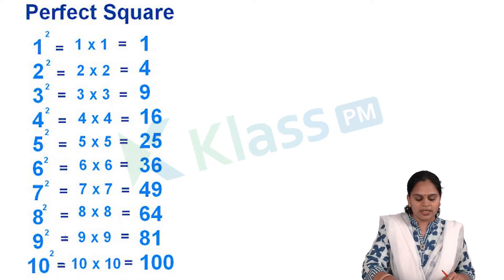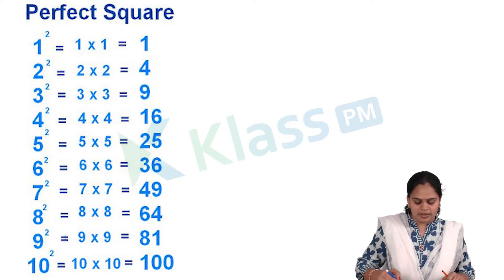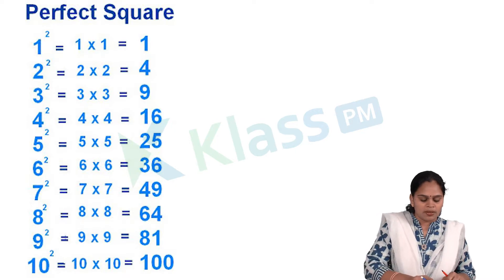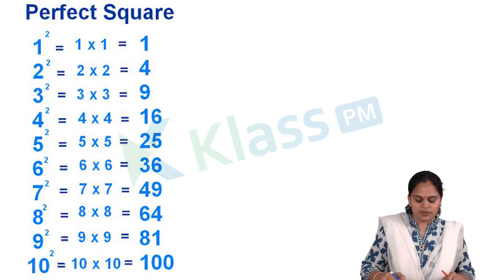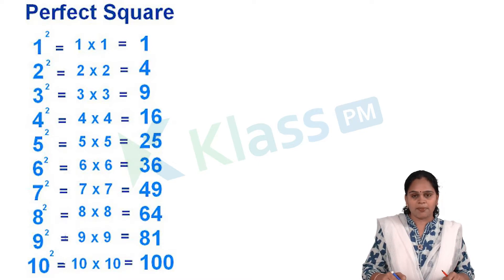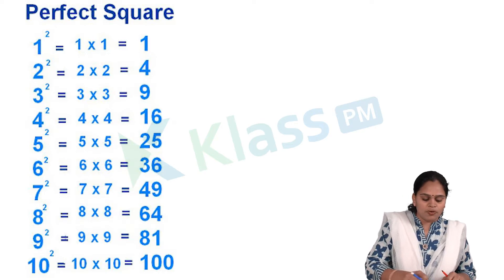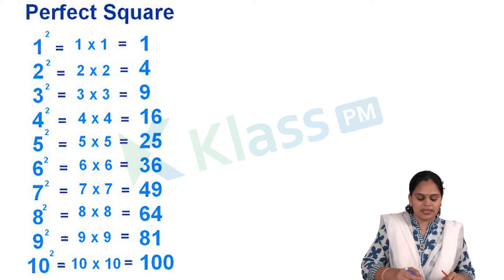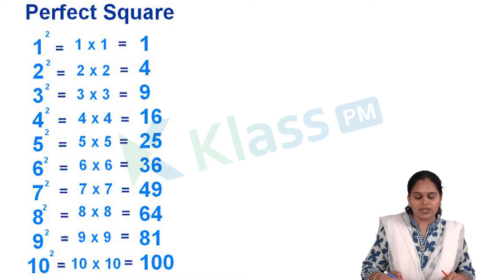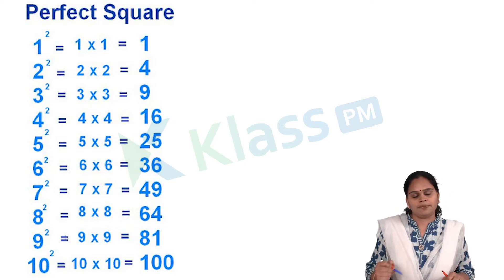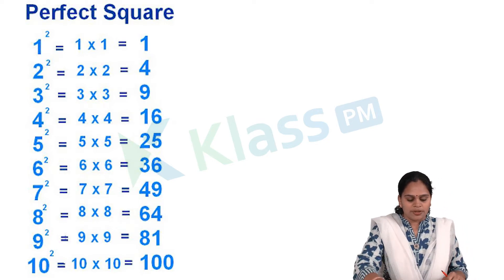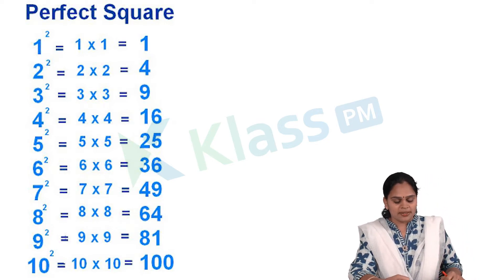2 square ending with 4 digit and the number 8 square also ending with 4. See 3 square means 9 and 7 square also ending with the number 9. 4 square ending with 6 digit and 6 square also ending with 6 digit, and 5 square here, it's ultimate, it is 25. Here you need to observe the pattern.